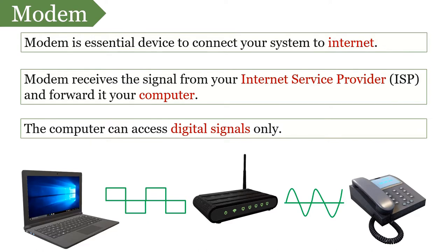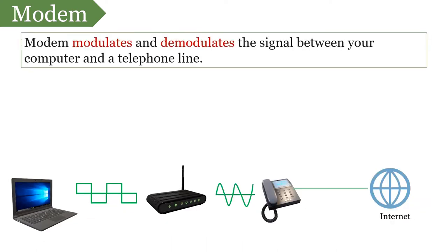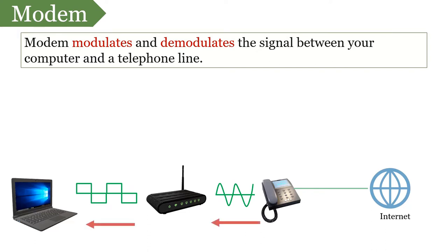When you upload something on the internet, the modem modulates the digital signal from your computer to an analog signal that can be carried over the telephone lines. When you download something from the internet, the modem demodulates the analog signal over the telephone line into a digital one that can be accessed by your computer.